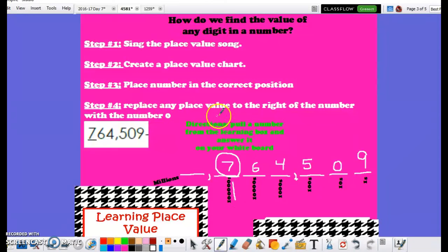if you follow step four, you'll make sure that you never make any mini mistake, like forgetting a zero, or placing something in the wrong spot. Step four tells you to replace any number that is directly to the right of the number you're trying to find the value of, with a zero. So in 764,509,